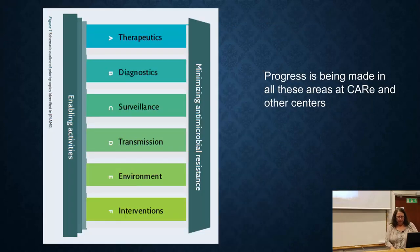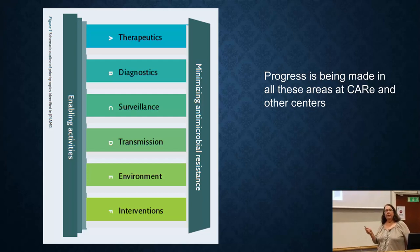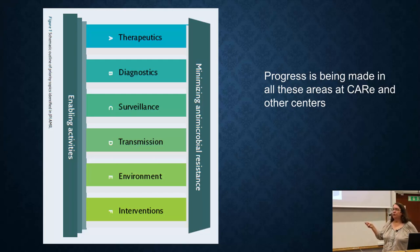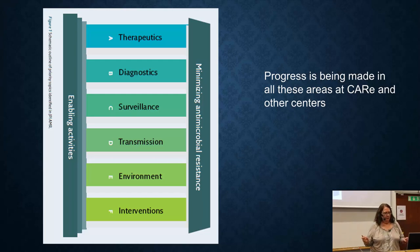The EU has split up the types of approaches needed to deal with antibiotic resistance into six different categories: therapeutics, diagnostics, surveillance, transmission, environment, and interventions. You've heard about most of these, but I'm going to put them in a little bit of a framework.